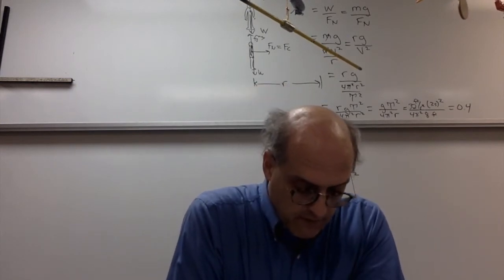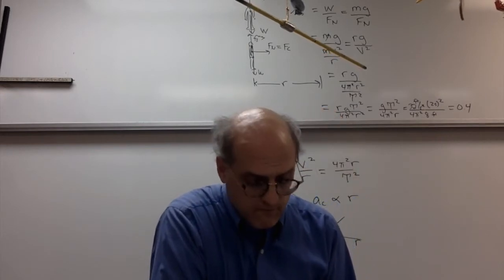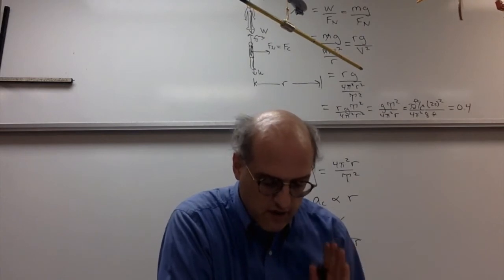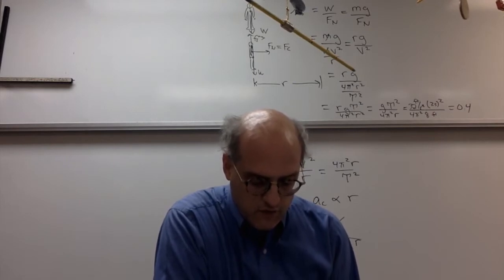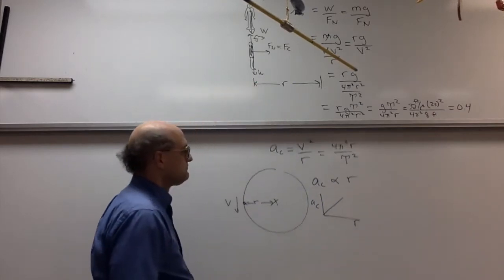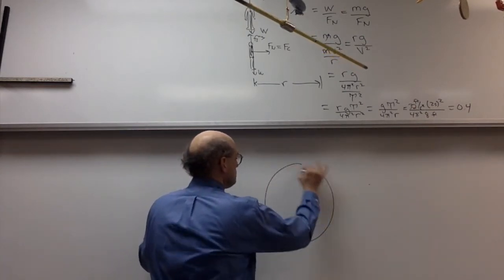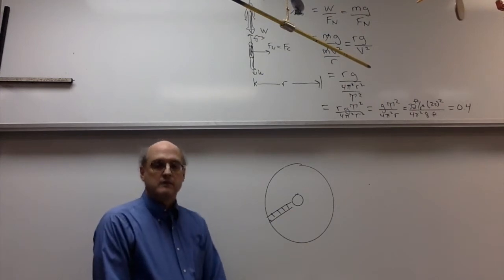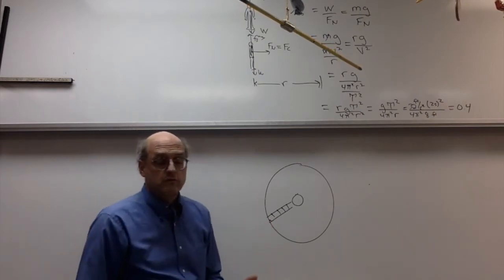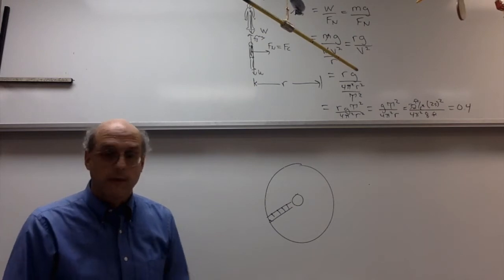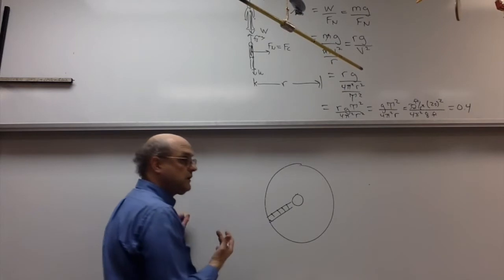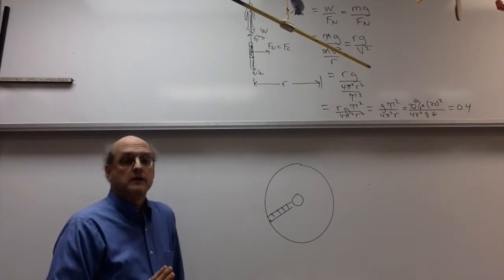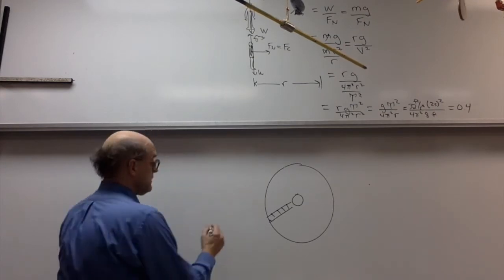Number three: we have a space station with a rotating room to simulate gravity for astronauts. An astronaut climbs down a ladder, and we want to know how his apparent weight varies with distance from the center of the hub. This is in deep space, so gravity is negligible — zero. As he climbs down the ladder, the only force acting on him is the normal force exerted by the rungs toward his body. That's his apparent weight.